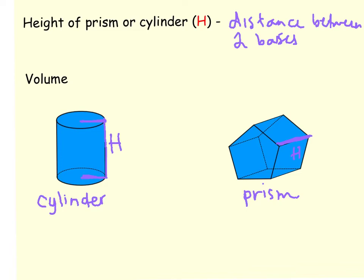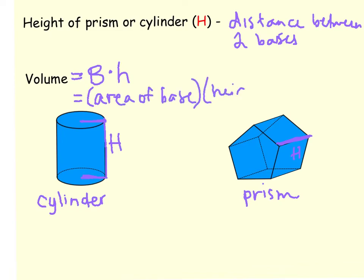To find the volume of a prism or a cylinder, the formula is: you take the area of the base — I use a capital B because the base can be different shapes. In a cylinder it's a circle; in a prism it could be anything — a triangular prism, a rectangular prism, or like this one, a pentagonal prism. So volume equals capital B times height, where B is the area of the base and H is the height of the prism or cylinder.